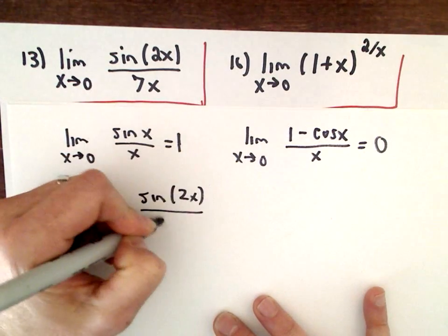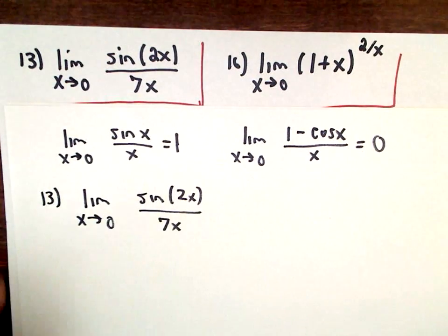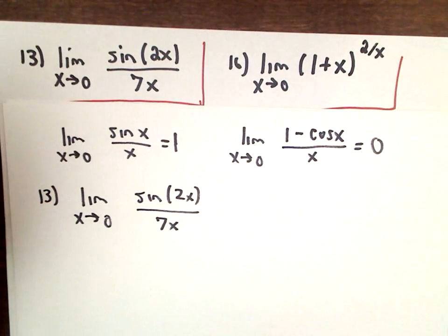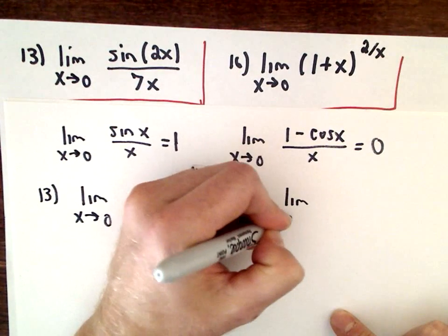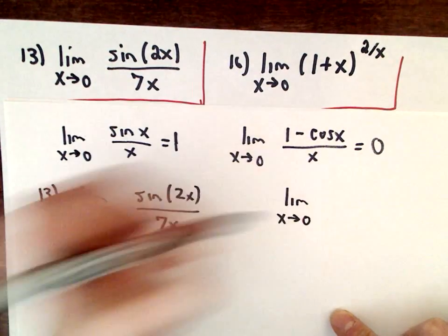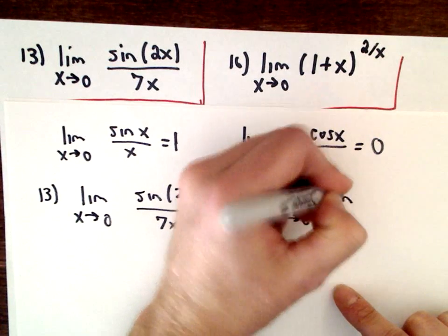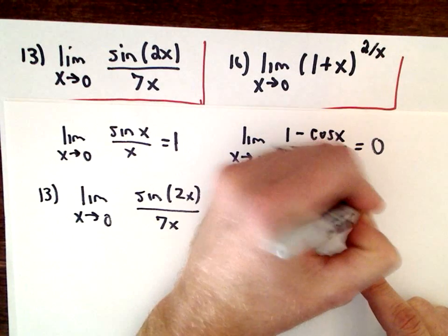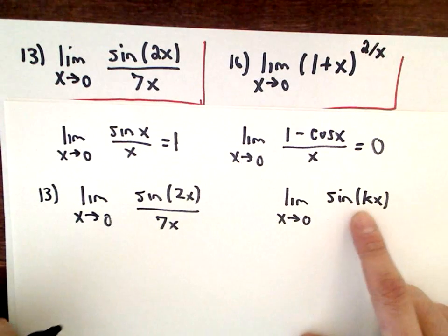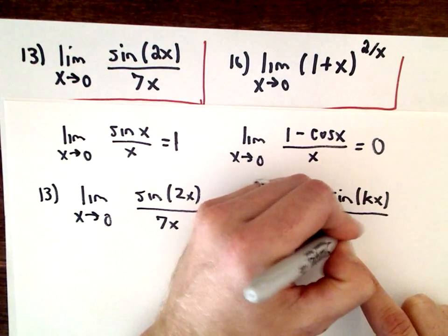Okay. So sine 2x over 7x. This one is probably, in terms of the trig limit ones, this is probably one of the more straightforward ones. So the idea is, I'm going to write it more generically. So we've got the limit as x approaches 0. You can really have sine of any number multiplied by x. Any multiple, any number times x. 2x, 3x, 4x, 5x, 10x. But the idea is you want that same number in the bottom.